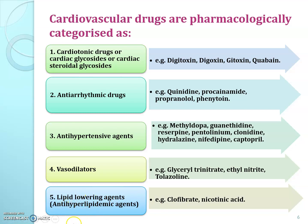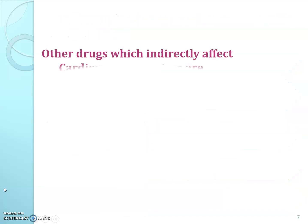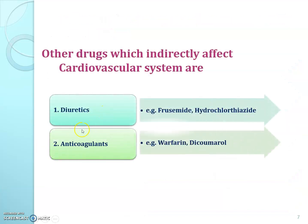Other cardiovascular drugs having an indirect effect on the cardiovascular system are: first, diuretics — examples are furosemide and hydrochlorothiazide; and second, anticoagulants — examples are warfarin and coumarin.